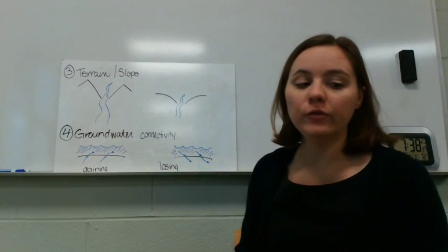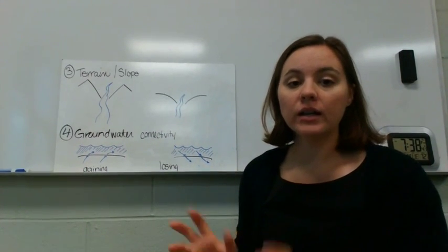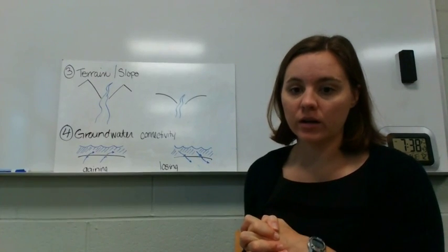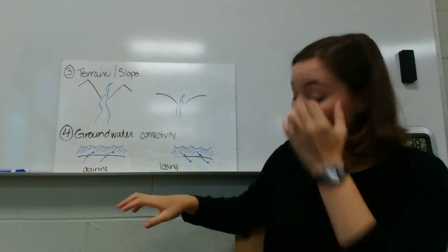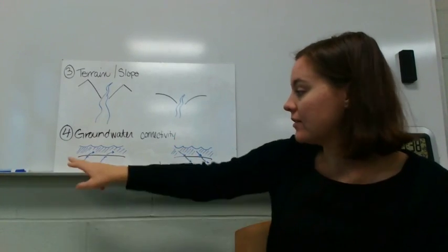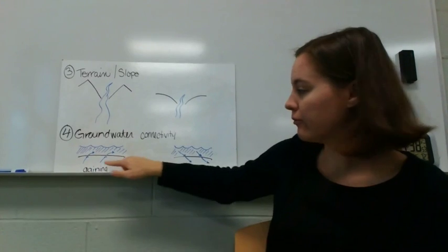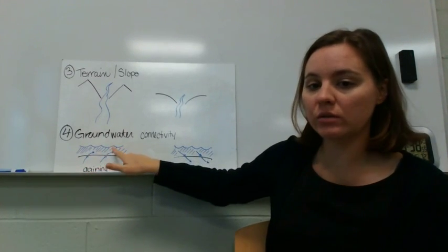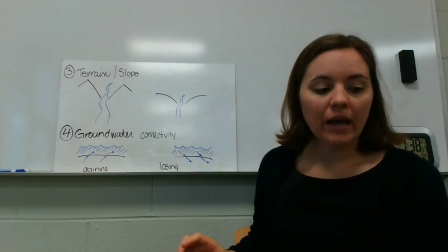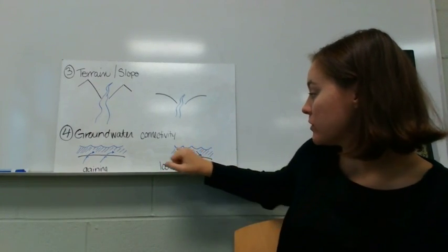And then the fourth thing that influences surface water flow is the connectivity with the groundwater. So groundwater connectivity. We can have two options: we can have a gaining stream, so that means that groundwater is actually flowing from the ground into the stream.